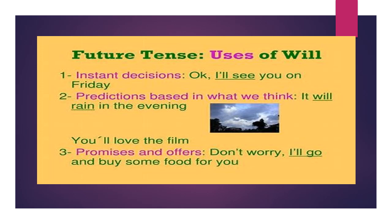Number two, we have prediction based on what we think — it's not based on evidence. For example, we say 'it will rain in the evening.' Do we have evidence? Are we sure? No, we don't have evidence — we just think it will rain.